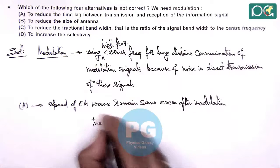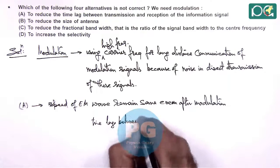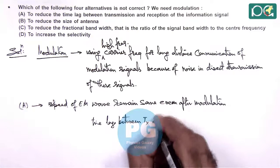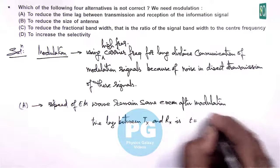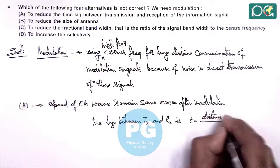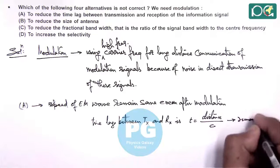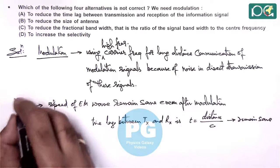So if we calculate the time lag between transmitter end and reception end, this time we can simply write the distance divided by speed of light which remains same. So here we can say A is not correct.